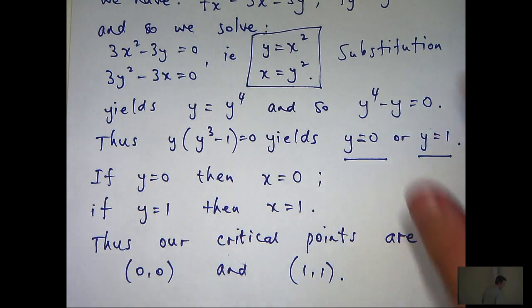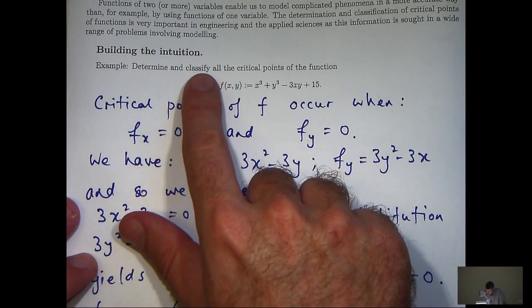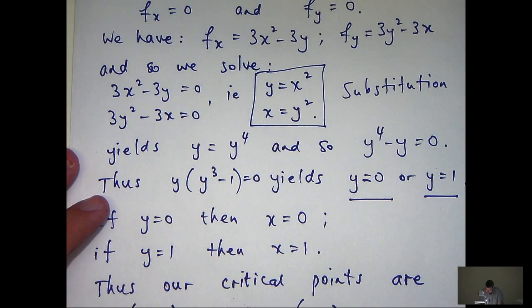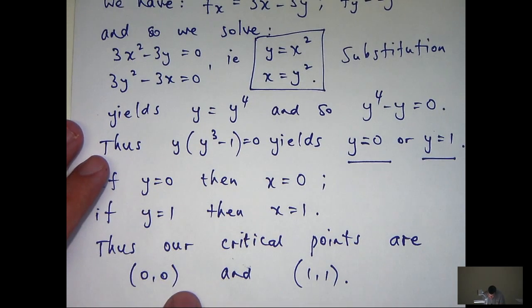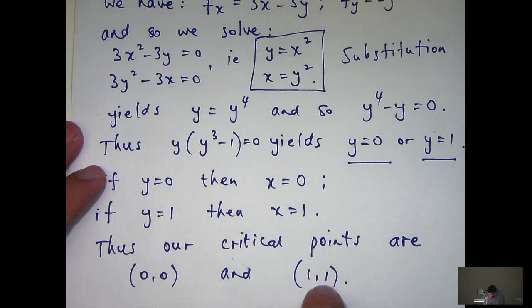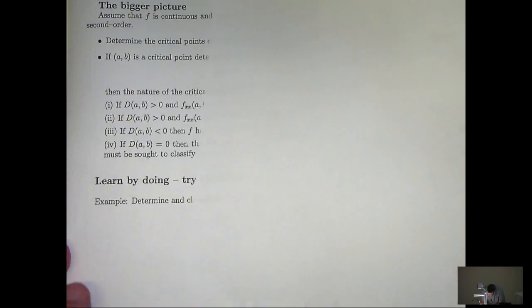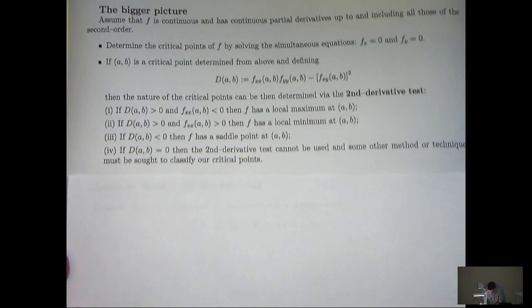The second half involves classifying. Does f have a local max, a local min, or a saddle point at this point? And similarly, what about this point? To do that, we're going to classify these critical points using an idea called the second derivative test.